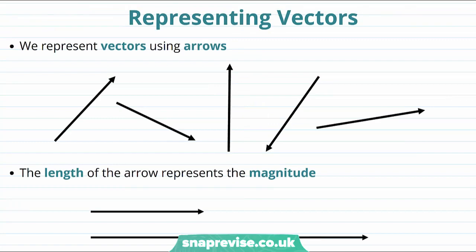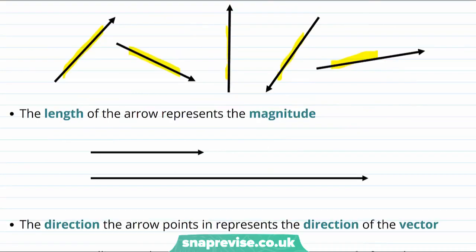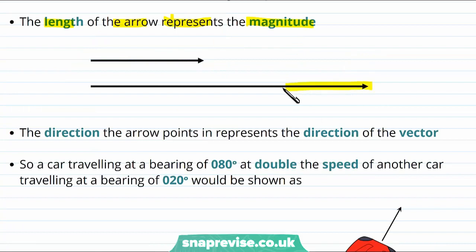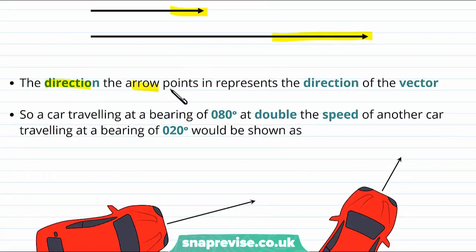Now let's just expand a bit more on how it is that we really represent vectors. Well, we know that we represent vectors using arrows. And each of these arrows, for example, represent different vectors because they point in different directions. So the direction of the arrow represents the direction of the vector, but also the length of the arrow is used to represent the magnitude of the vector. That is, the size of the vector. For example, the bottom arrow represents a vector that has a much larger size or magnitude than the top arrow.